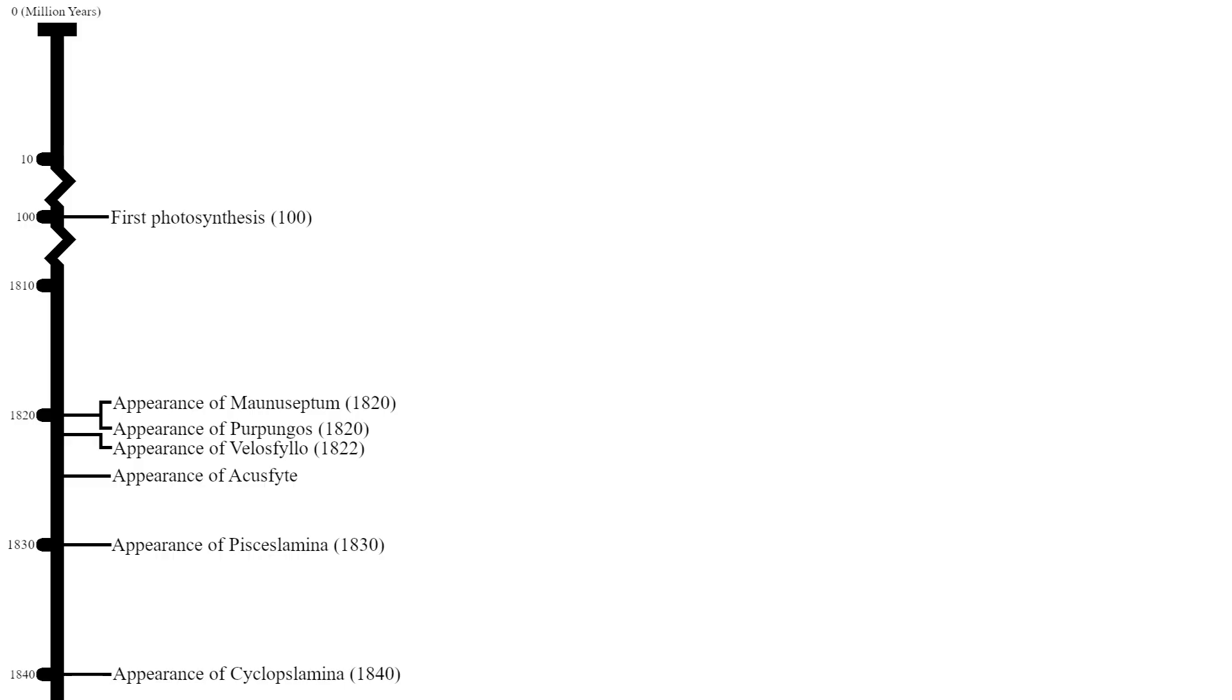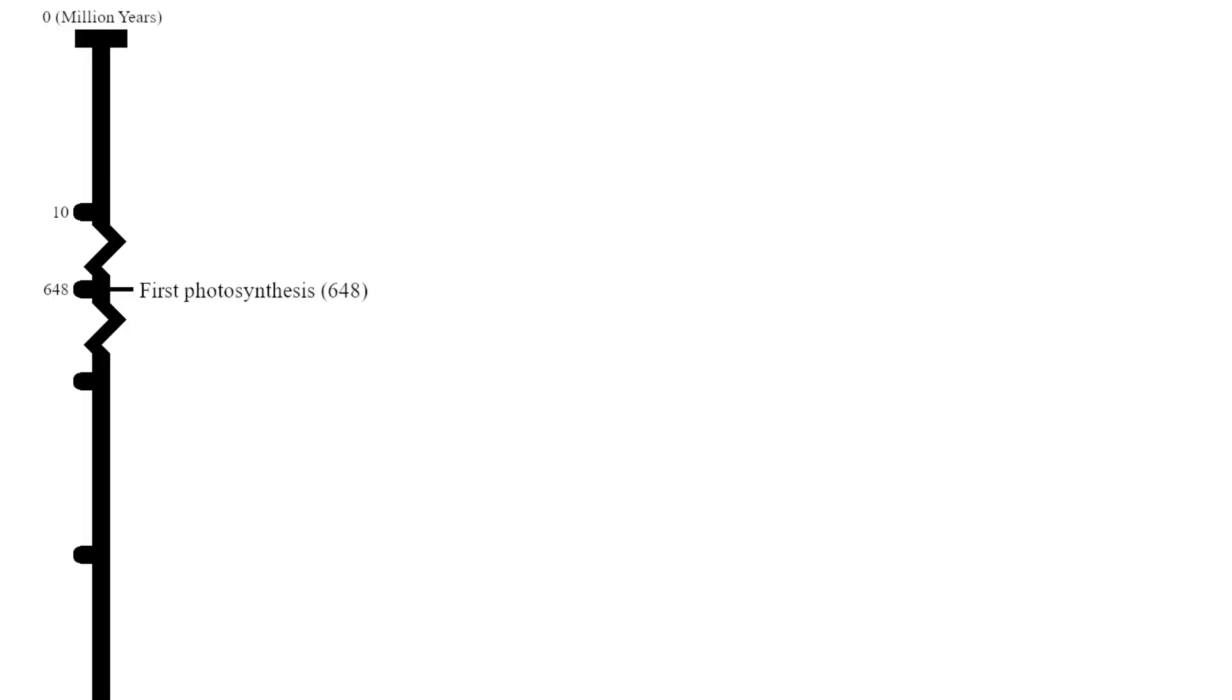On Nusku, photosynthesis evolved extremely quickly. However, on Mazu, this will not be the case. Mazu's aliens will take over 600 million years to evolve photosynthesis. Perhaps this is due to a long-term ice age very early in Mazu's history, where the entire planet was frozen over with ice. The lack of sunlight reaching the water below made it impossible for photosynthesis to evolve. Maybe an impact or an increase in volcanic activity finally broke up the ice enough for life to begin using the sun as an energy source.